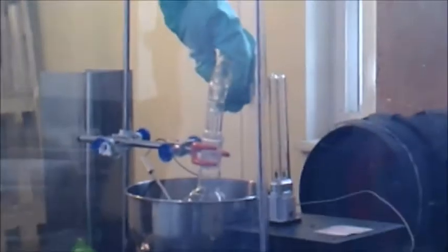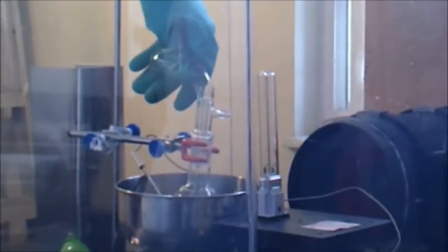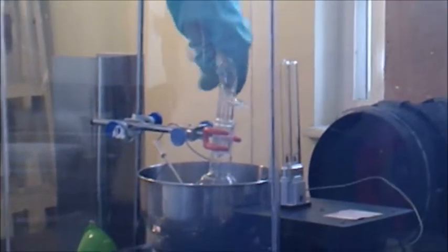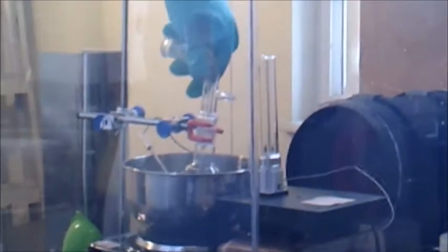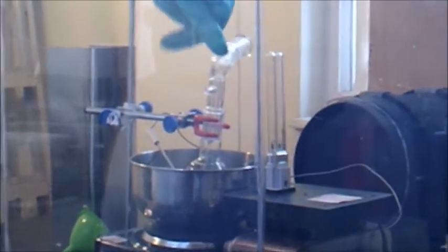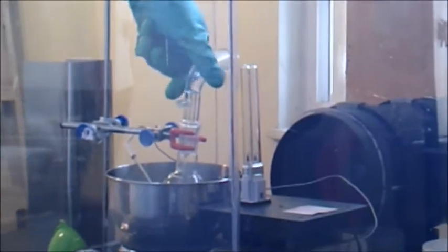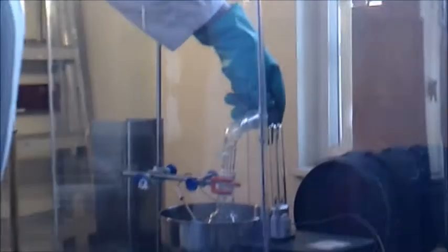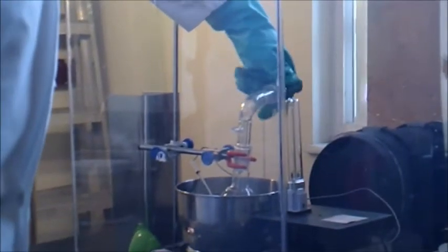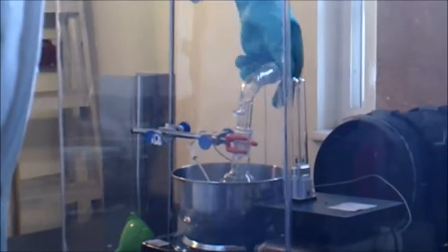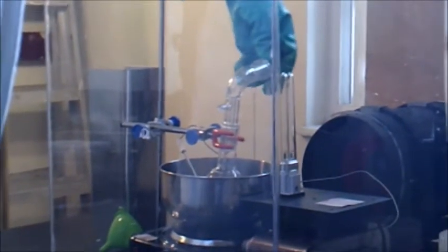Alright, so now I'm going to fit the round bottom flask with a fitting which will allow any vapors given off to be directed towards the fan in the back. And I'm going to attach a stopper to the fitting so that there's only one port where the vapors can escape.